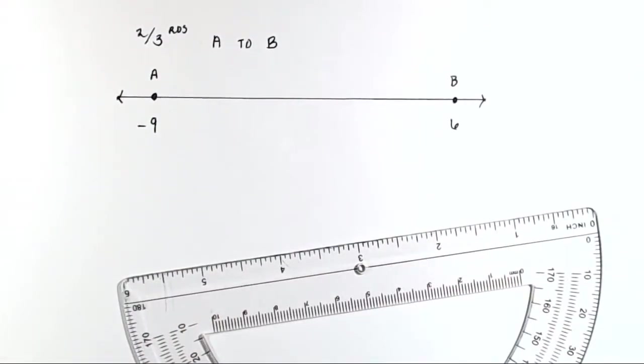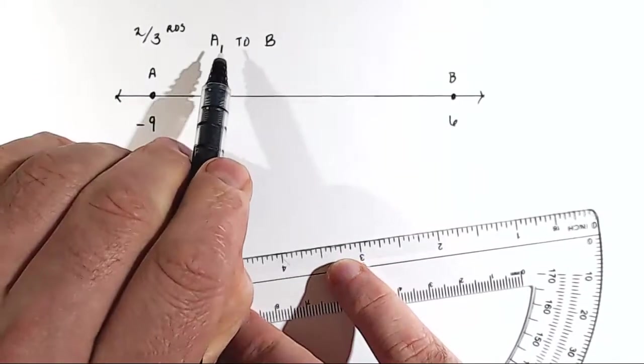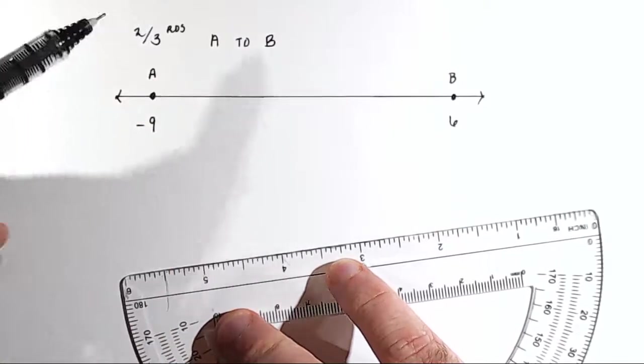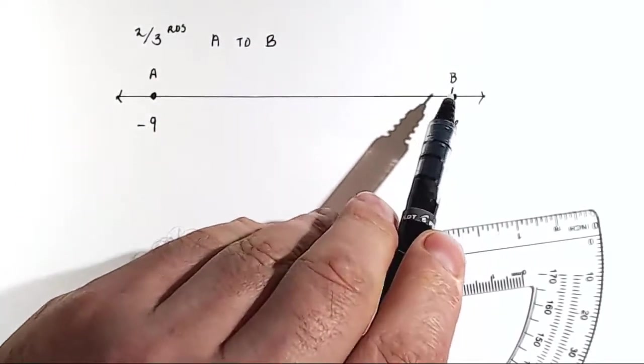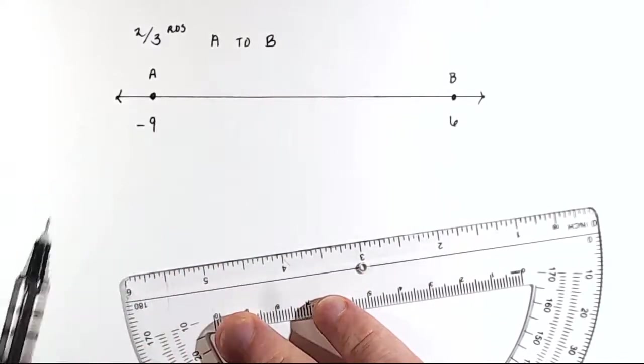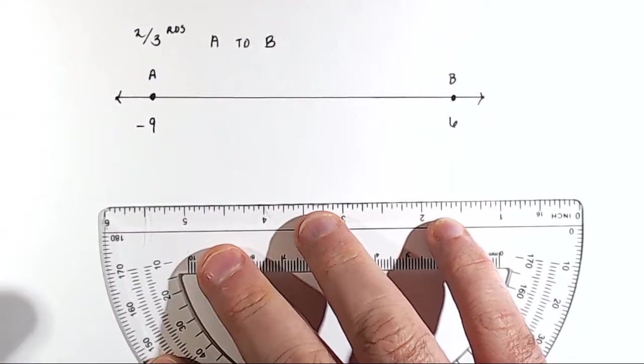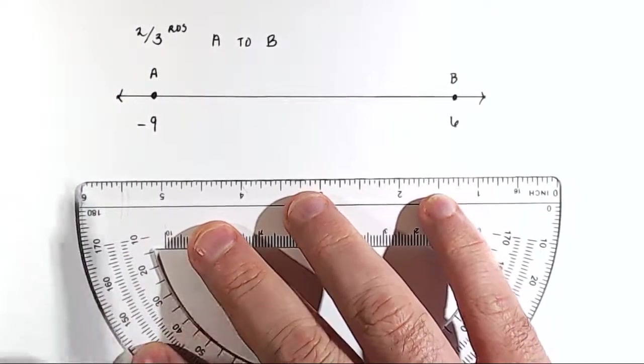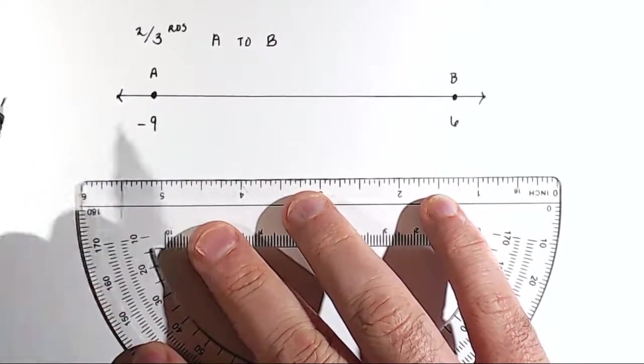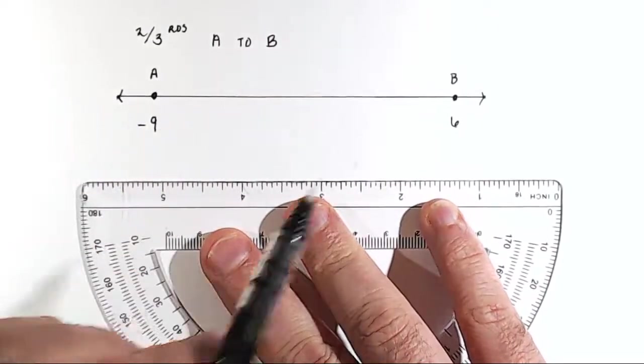So a couple things to notice here right away is that direction matters. So are we going from point A to point B, or are we going from point B to point A? Because that would be two separate locations. So when we're trying to find fractional distance, all we have to do is ask ourselves, what is the absolute difference between the two points?